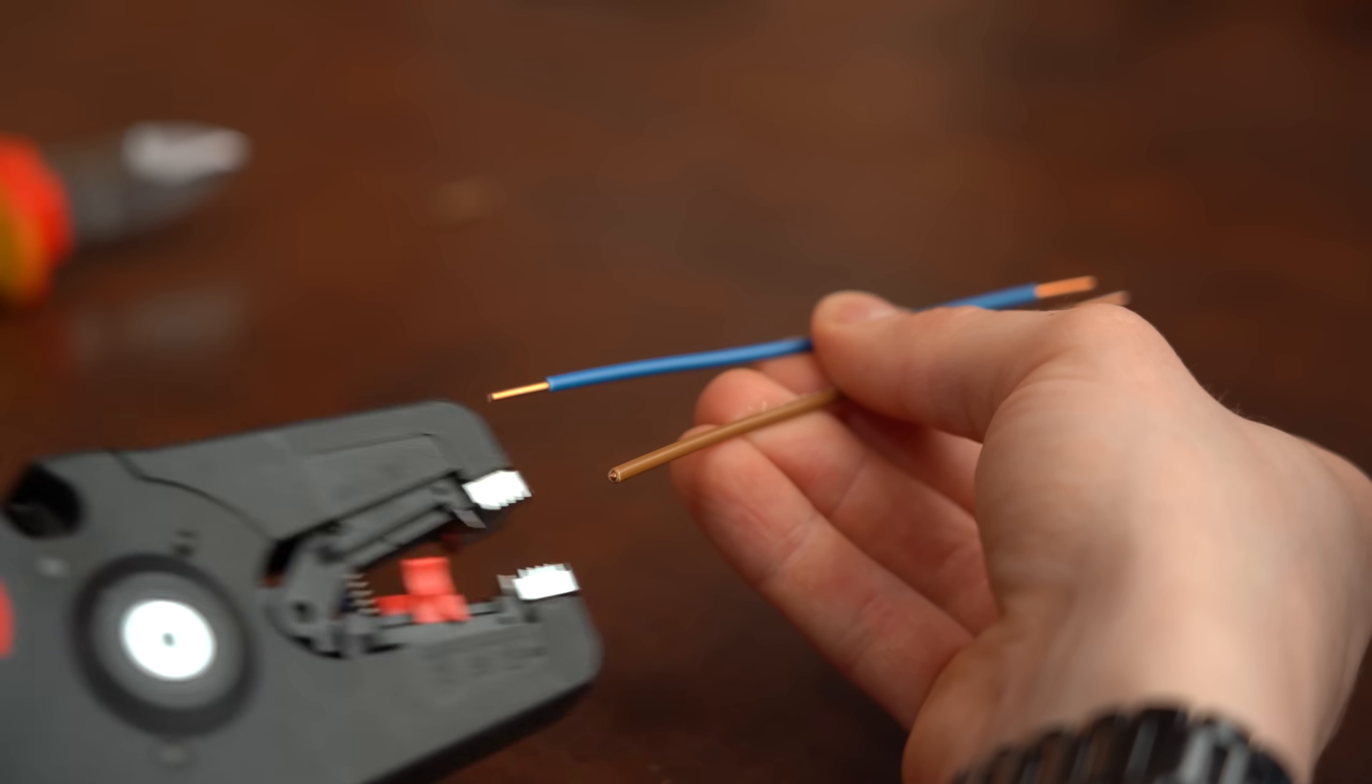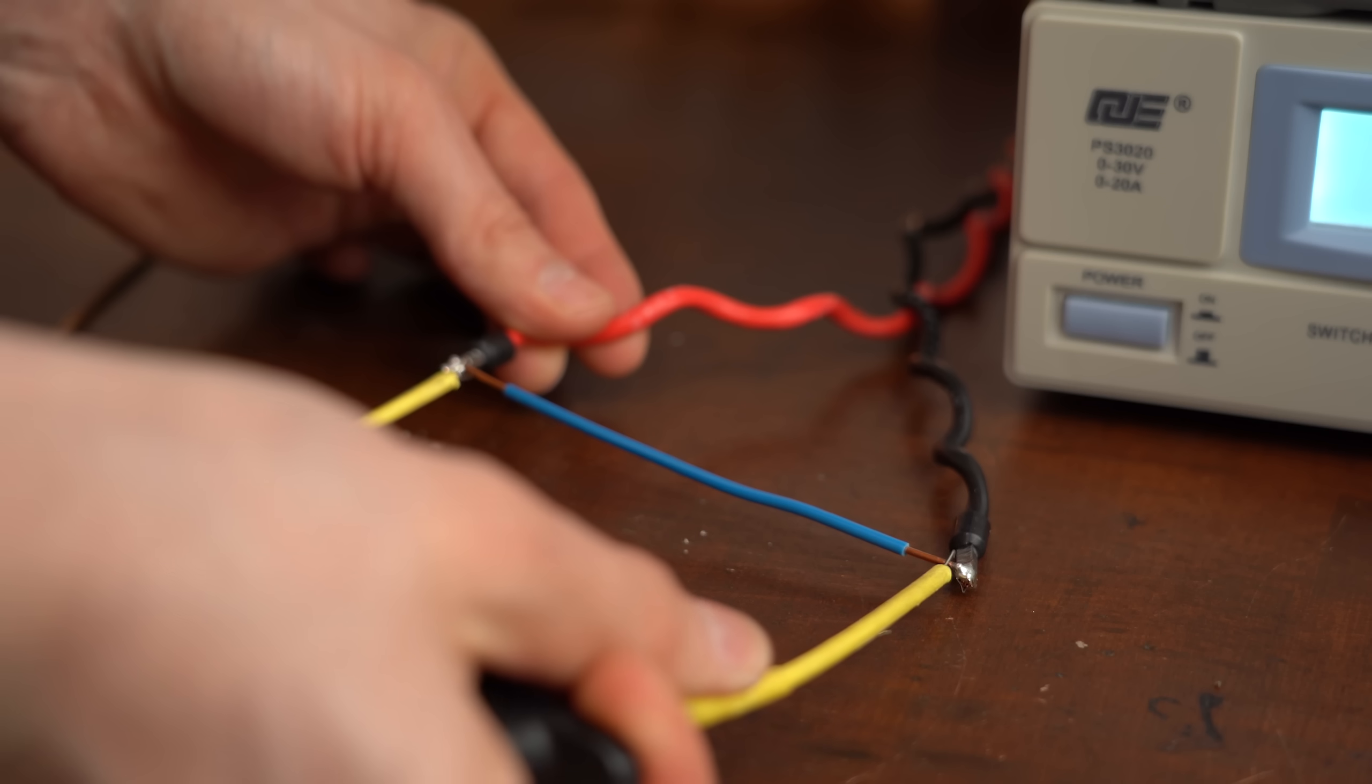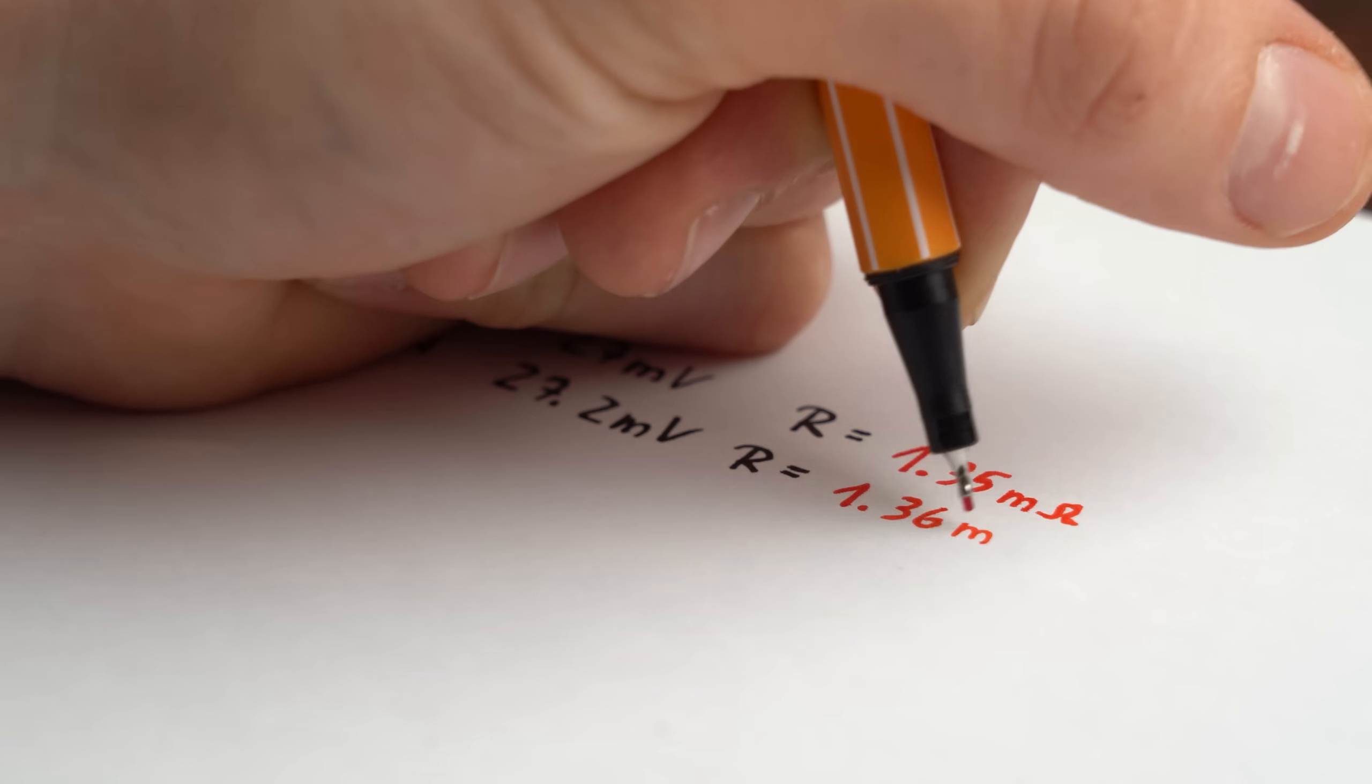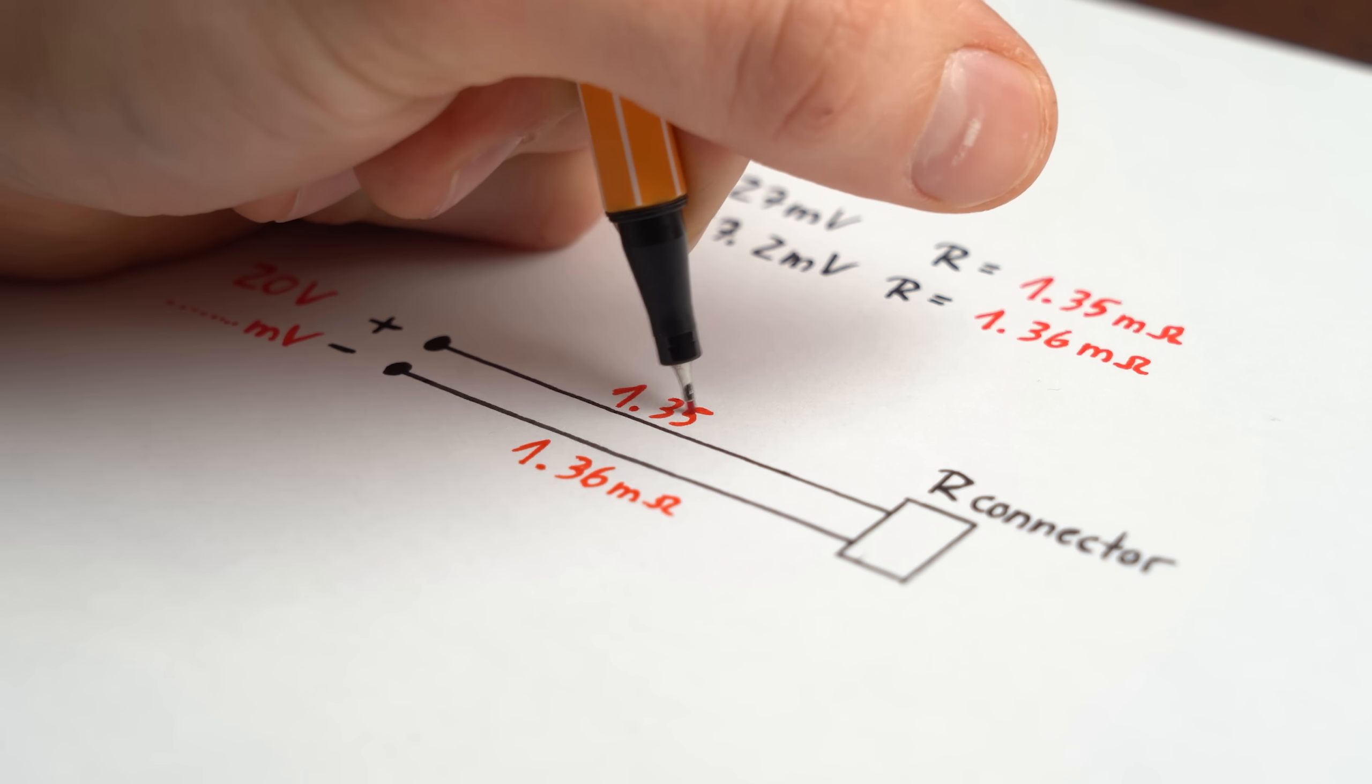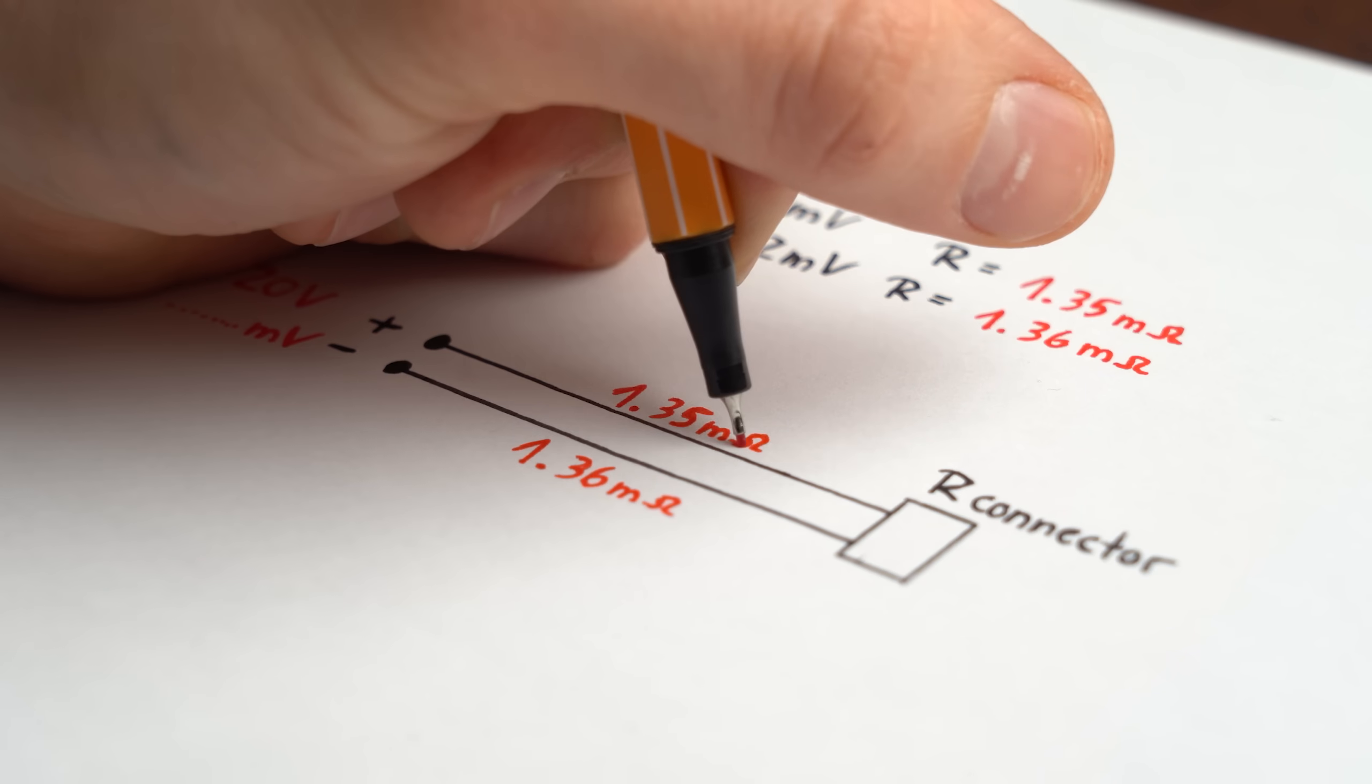But anyway, to measure the resistance of my connectors, I firstly created two pieces of solid core wire of which I measured the voltage drop while 20A were flowing through them. By doing a bit of math, I calculated the copper resistance of them, which I can then subtract from the complete setup with the connector in place so that we are only left with its resistance.